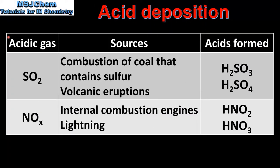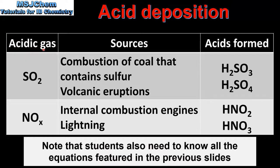Let's end the video with a summary. In this table we have the acidic gas, the sources, and the acids formed. Starting with sulfur dioxide, the sources are combustion of coal that contains sulfur and volcanic eruptions. The acids formed are either H₂SO₃ sulfurous acid or H₂SO₄ sulfuric acid. For the oxides of nitrogen, the sources are internal combustion engines and lightning, and the acids formed are HNO₂ nitrous acid and HNO₃ nitric acid. In the next video we will be looking at the effects and reduction of acid deposition.